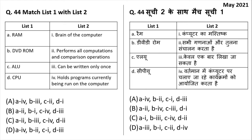Match the following. RAM — Random Access Memory — holds the computer programs currently being used, matching with option 4. DVD-ROM — Digital Versatile Disk Read-Only Memory — can be written only once, matching with option 3. ALU — Arithmetic Logic Unit — is used for comparison, computation, and logical operations, matching with option 2. CPU is the brain of the computer, matching with option 1. The answer is 4, 3, 2, 1 — A is the right answer.